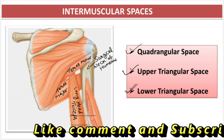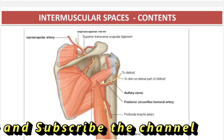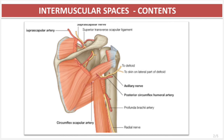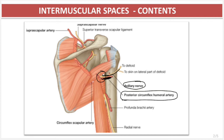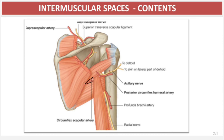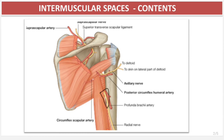We have seen the boundaries of all the intermuscular spaces. Now we move toward the contents. For the quadrangular space, you will find the axillary nerve and the posterior circumflex humeral artery. In the upper triangular space you will find only the circumflex scapular artery, which later takes part in the anastomosis around the scapula. In the lower triangular space you will find the profunda brachii artery — a branch of the brachial artery — and the radial nerve, both running in the radial groove.